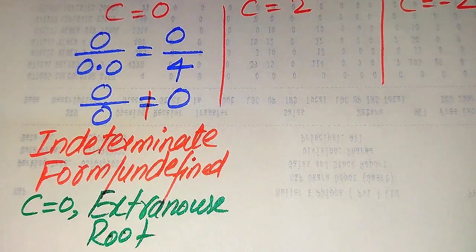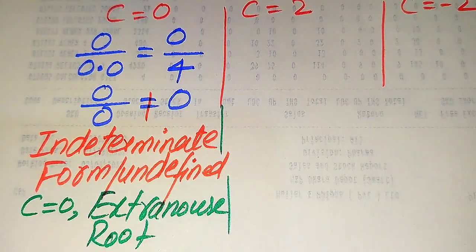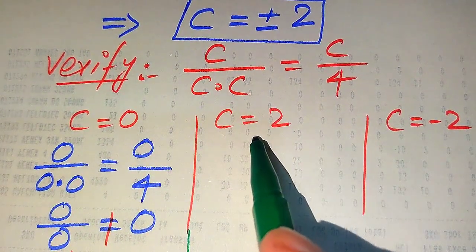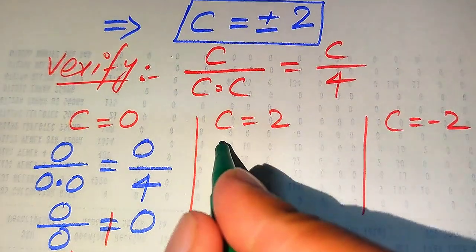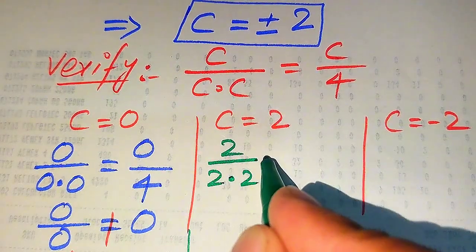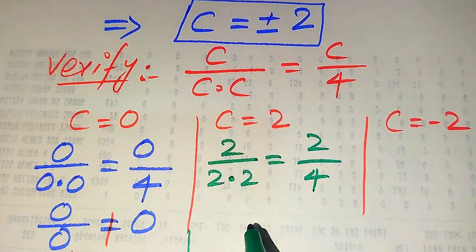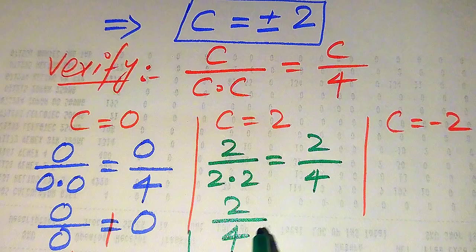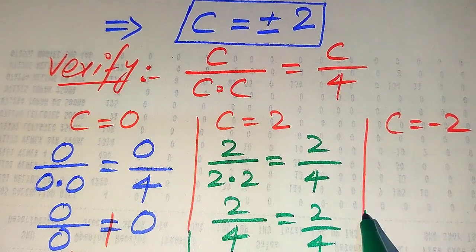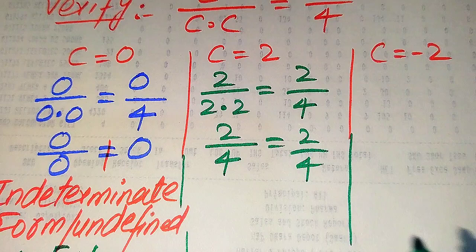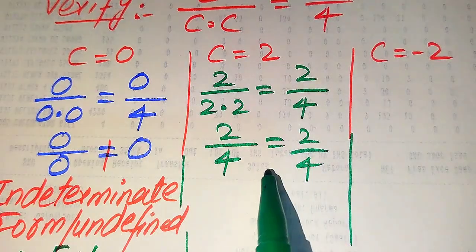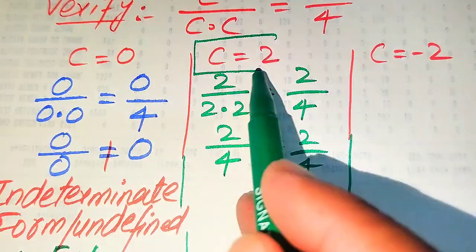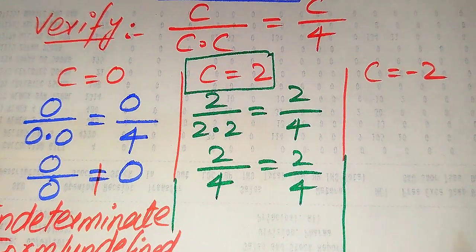Now we check c equals 2. We substitute this value on both sides: 2 divided by (2 multiplied by 2) equals 2 divided by 4, which gives 2 divided by 4 equals 2 divided by 4. Both sides are equal, so c equals 2 satisfies the given equation. We conclude that c equals 2 is the first solution of the given equation.